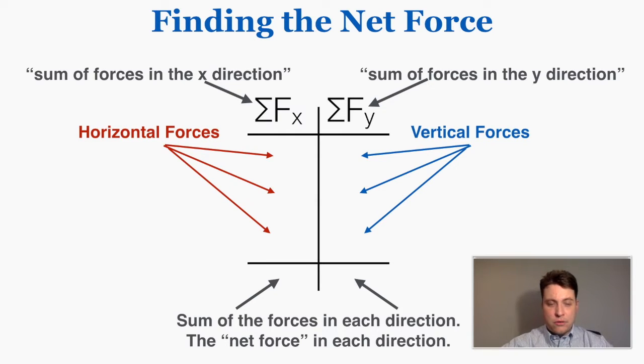In the next part of the table you're going to add together all the horizontal forces that appear in your problem and all the vertical forces that appear in your problem. Then on the very bottom you're going to write the sum of forces in each direction and that will be the net force. So the net force just means the sum of all the forces in each individual direction. I'll show you how to do this.